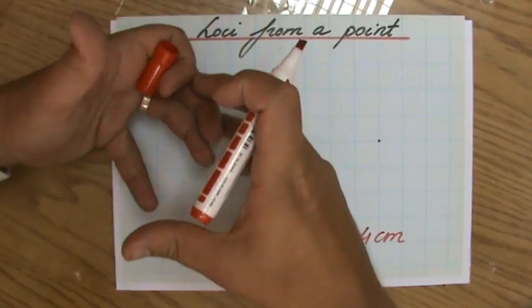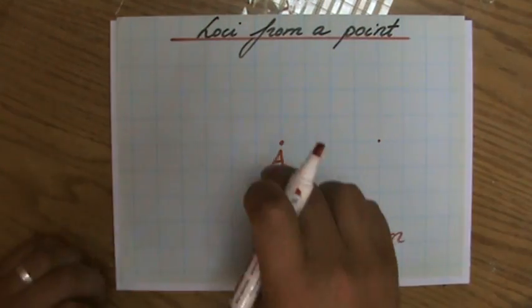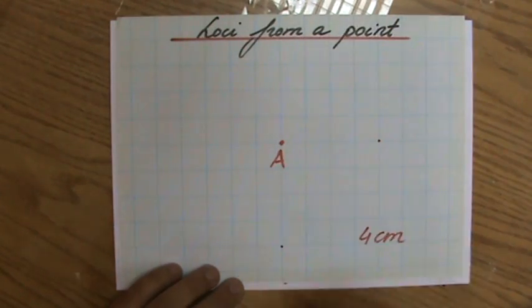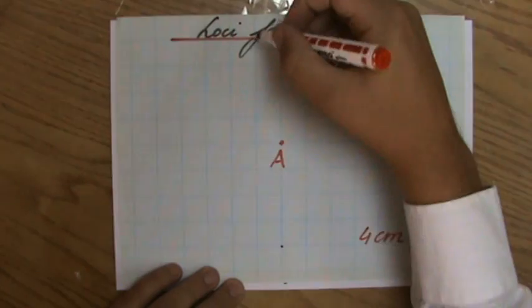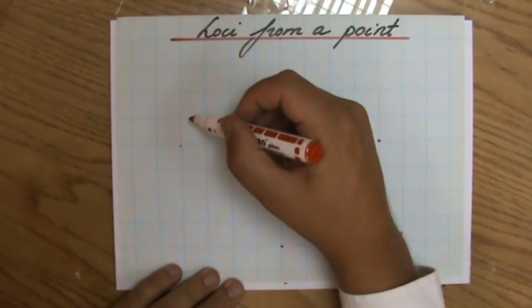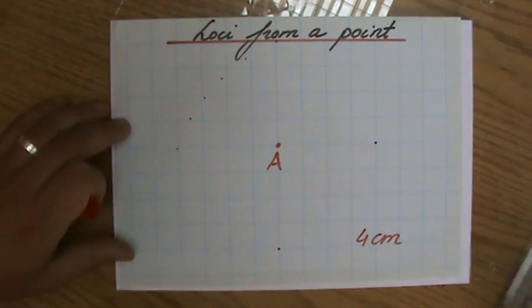But loci are all the points fitting that description. All the points four centimeters away from point A. For instance, here is also a point four centimeters away from A. Also over there and over here. In between those points, I have all these points four centimeters away from A.